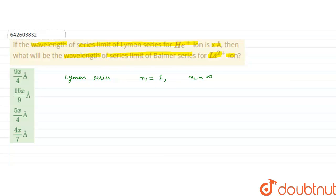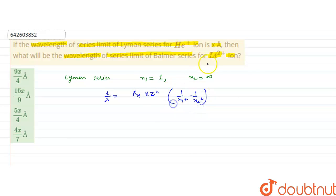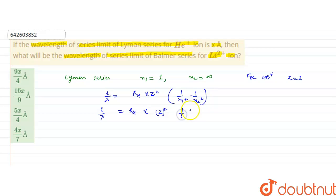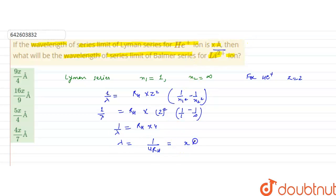If we write the wavelength in this case, 1 by lambda equals Rh into Z squared into (1 upon N1 squared minus 1 upon N2 squared). For helium plus ion, Z equals 2. So 1 by lambda equals Rh into 2 squared into (1 upon 1 squared minus 1 upon infinity squared). Since 1 upon infinity equals 0, we get Rh into 4 equals 1 by lambda, or lambda equals 1 upon 4Rh, which is given as X angstrom.